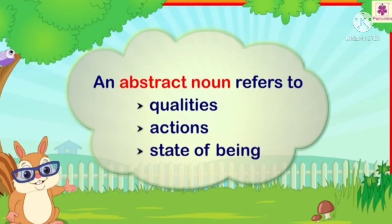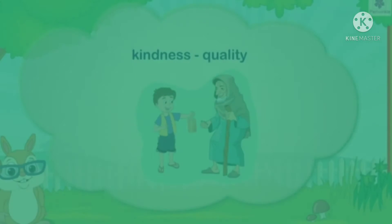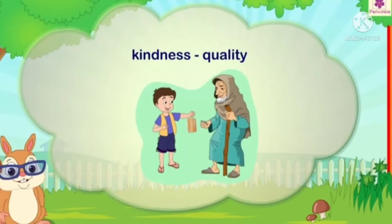We have some examples regarding abstract noun. Our very first example is kindness. Kindness is a quality — दया करना किसी पर. That is a quality. इसको हम ना देख सकते हैं, ना छू सकते हैं, इसको हम सिर्फ महसूस कर सकते हैं.